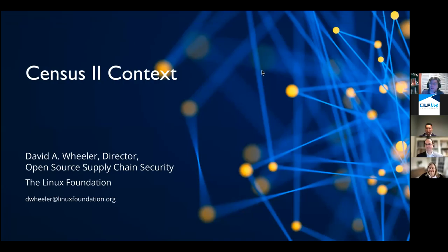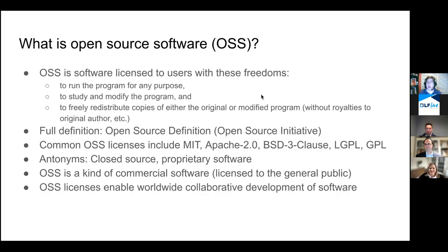Thank you very much. Frank Nagel is going to give some very interesting results from the research, but we thought it would be useful to first give a little context. Hopefully most of you already know what open source software is, but some people still have misunderstandings. We're talking about open source software — or free and open source software — which is software licensed to users with specific freedoms: run the program for any purpose, study, modify, and freely redistribute.